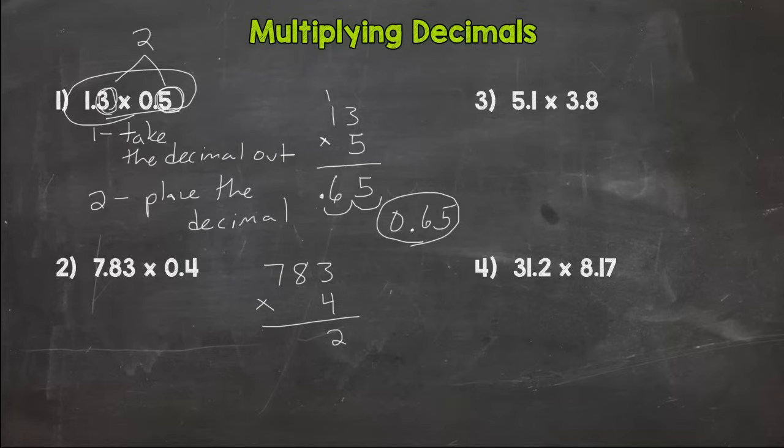3 times 4 is 12. 4 times 8 is 32, plus 1 is 33. 7 times 4 is 28, plus 3 is 31. So you get 3132.